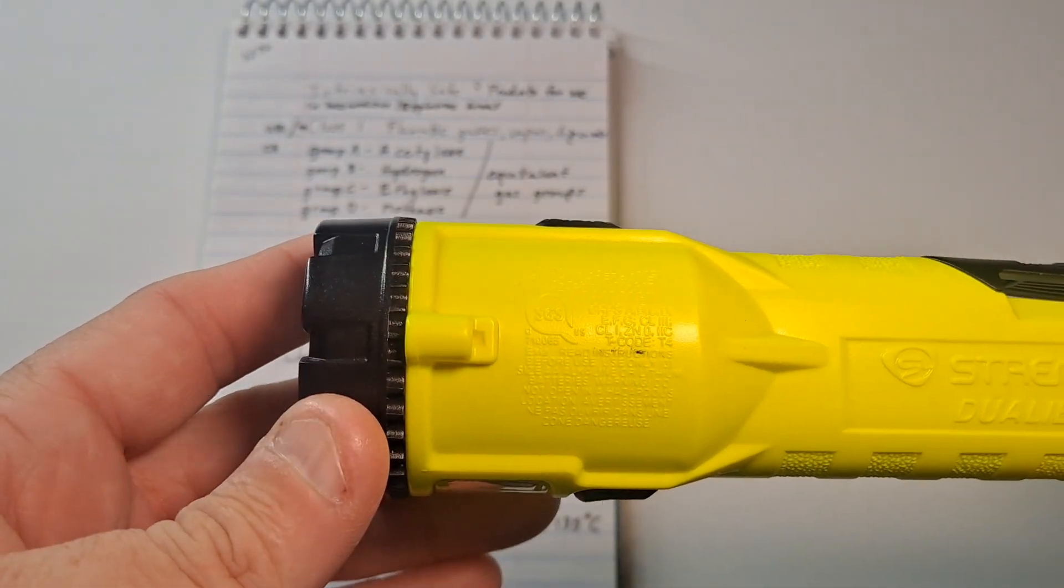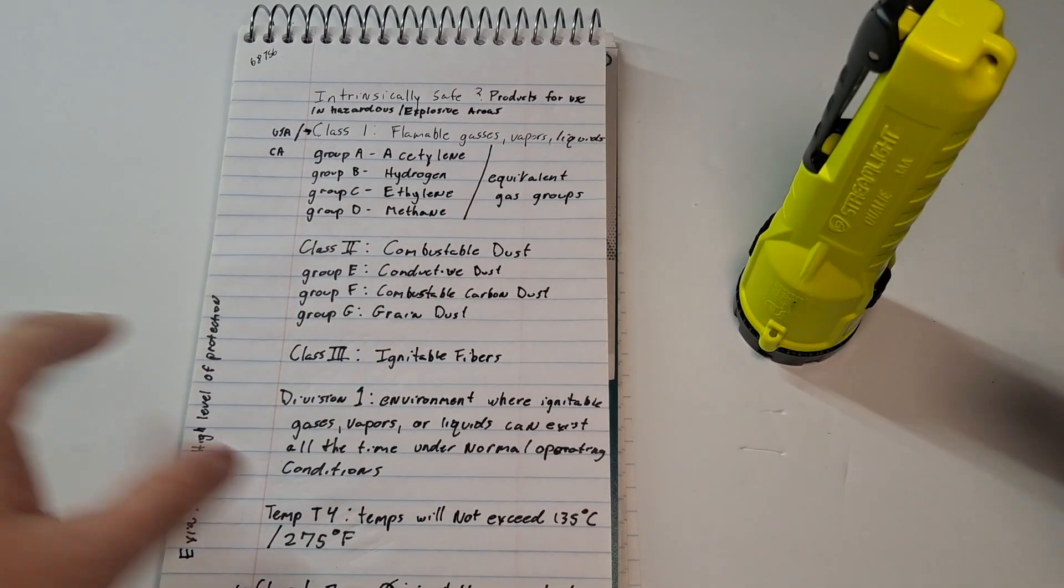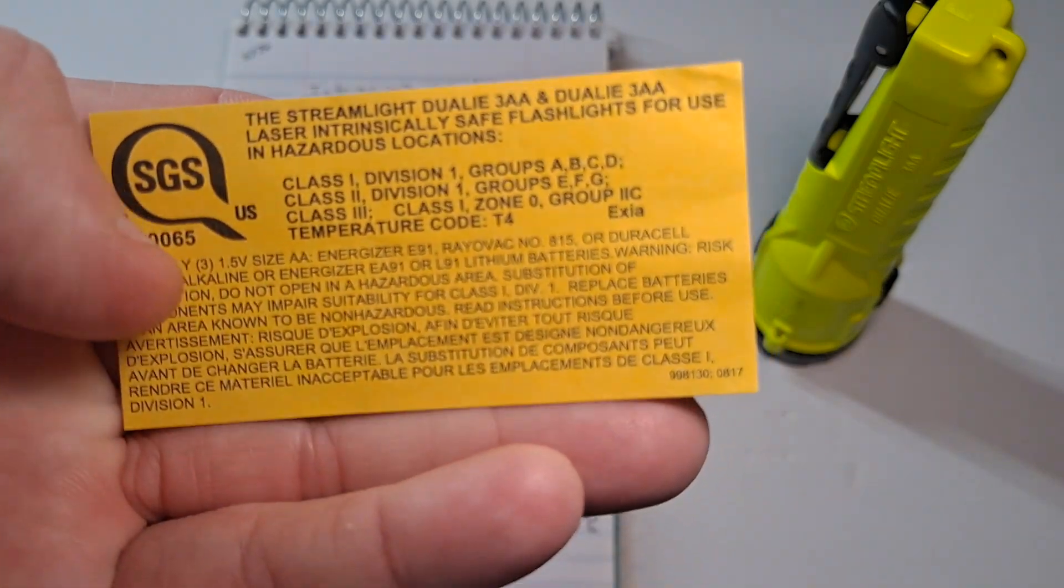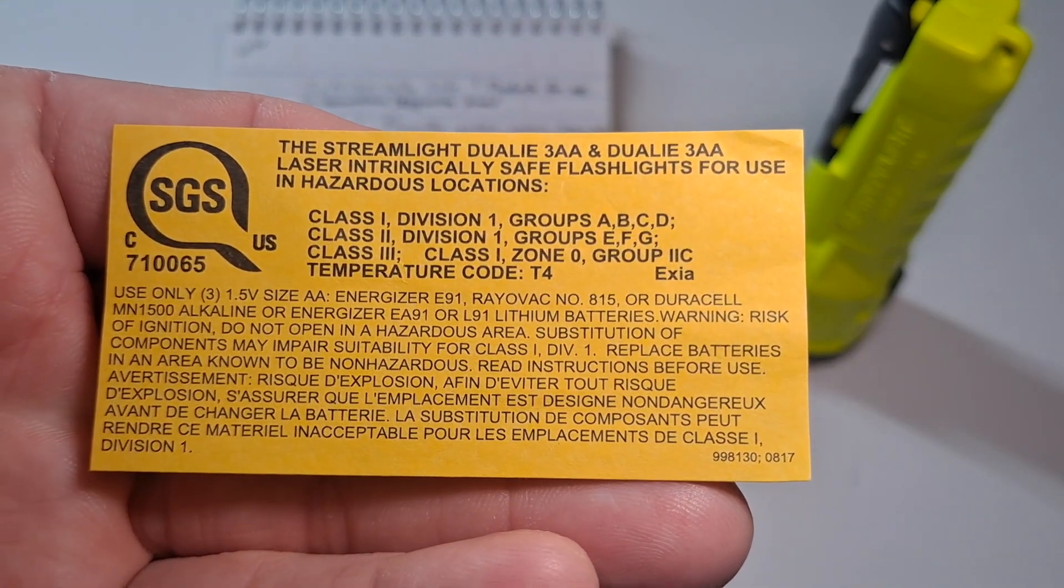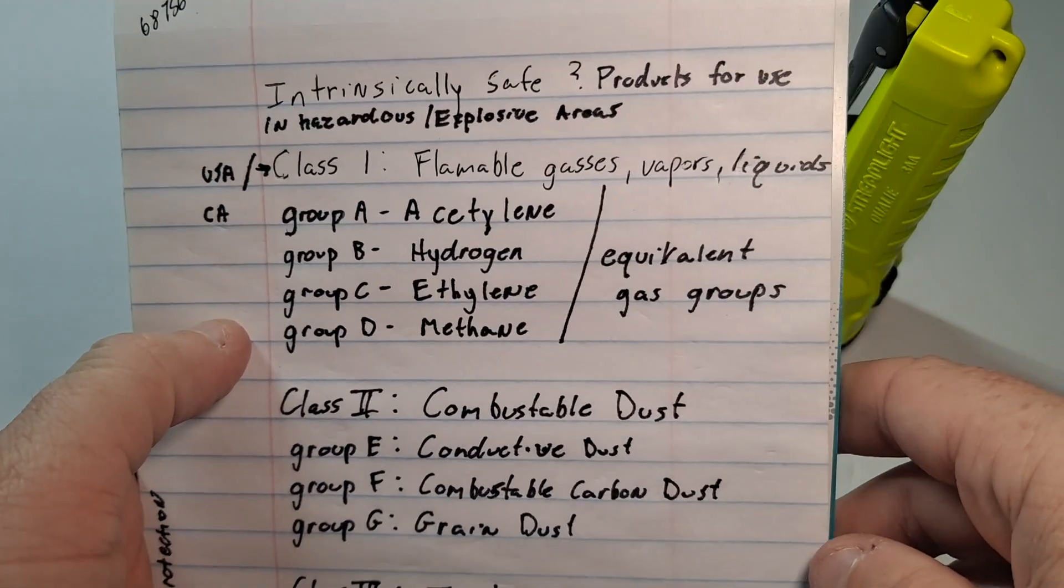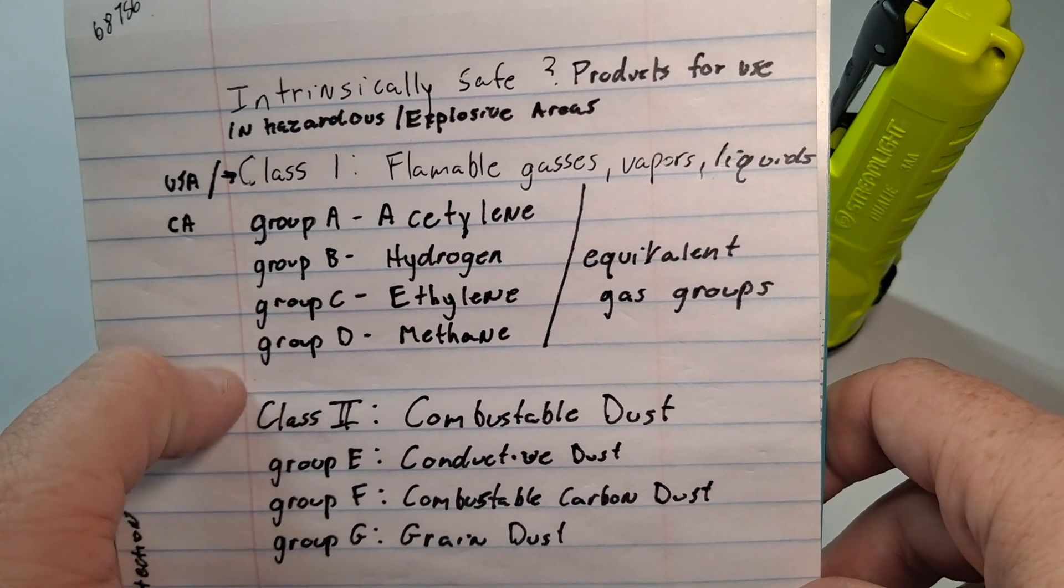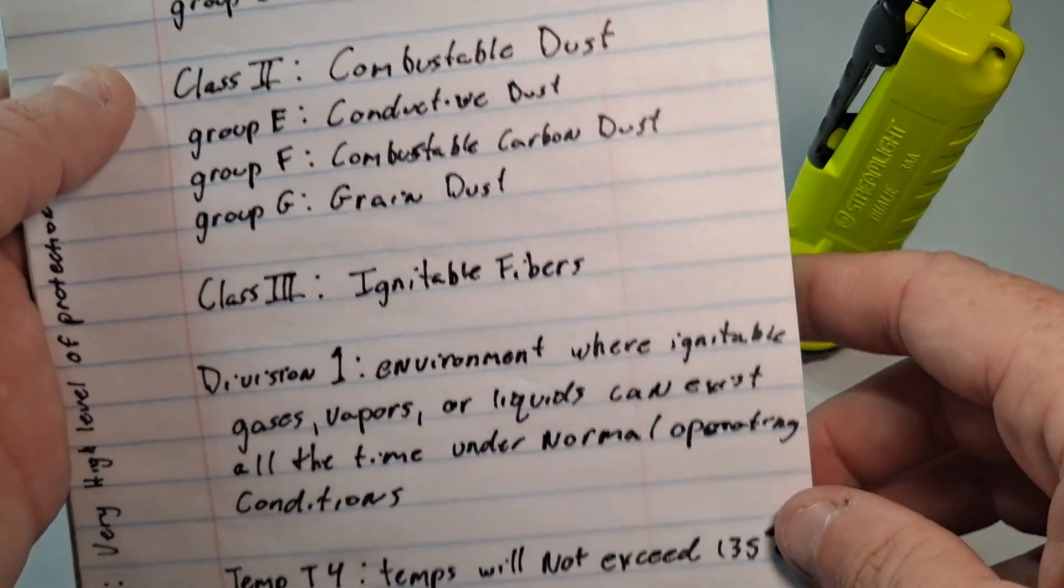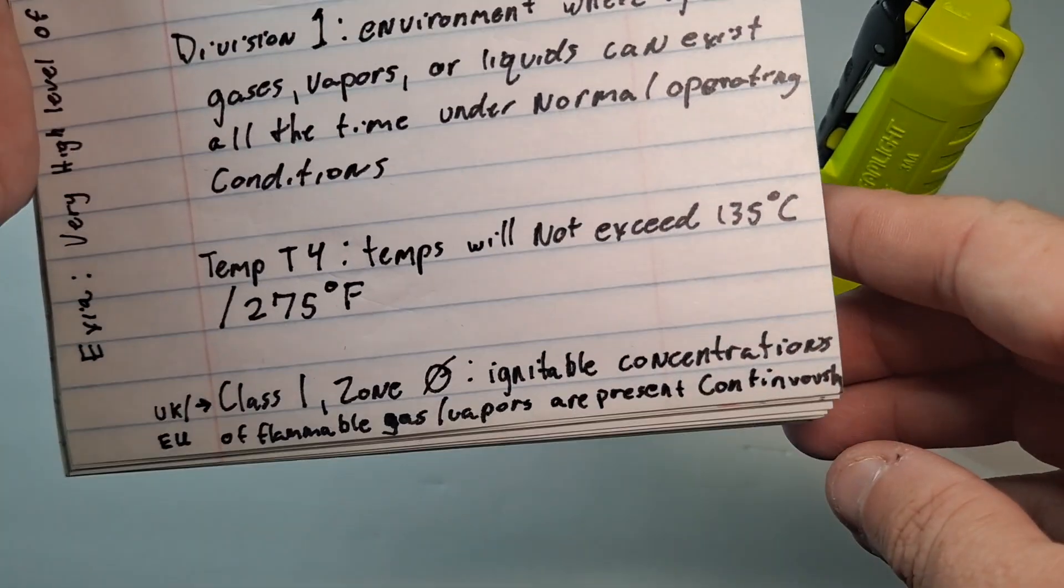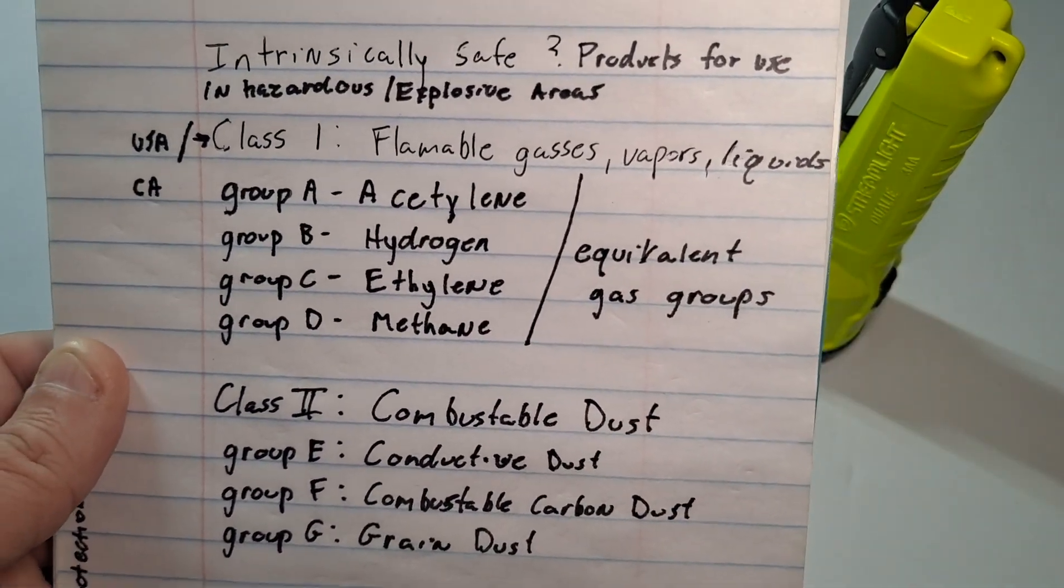So let's go over this here. Here's that class one division one group A B C D all that good stuff. So I'm not fancy I don't edit this stuff on the screen because I don't know how. Intrinsically safe products for use in hazardous or explosive areas. USA and Canada. So the first three groups and the division are U.S. and Canada. They're rated for the U.S. This is how they do it.